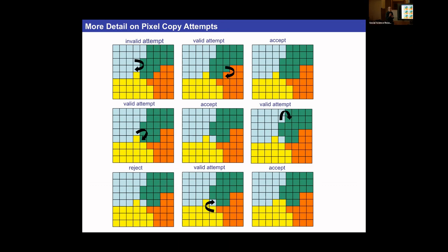If the orange cell was a single-pixel cell, it is removed from the simulation — one way to kill a cell. Another way is to literally overwrite pixels in a steppable. You can also determine the range — how far you can jump for the destination pixel — but jumping too far can fragment cells, which is bad. CompuCell has a connectivity plugin that prohibits certain pixel copies to prevent fragmentation.